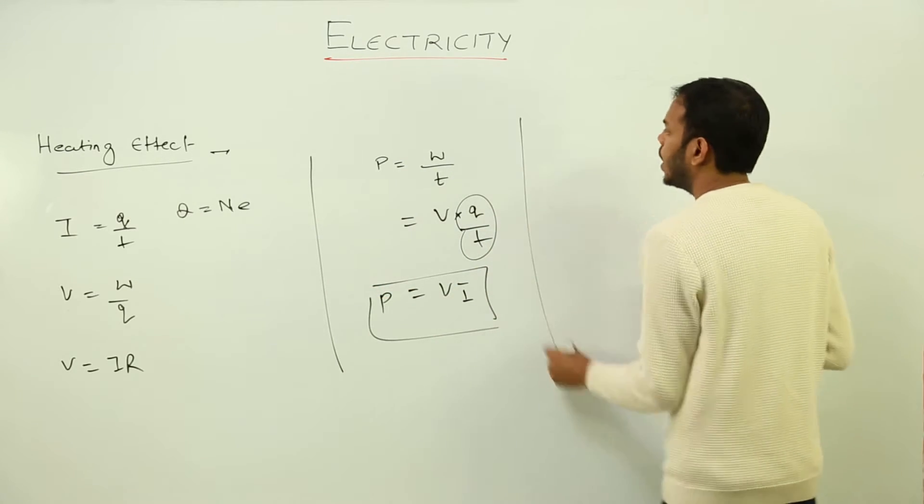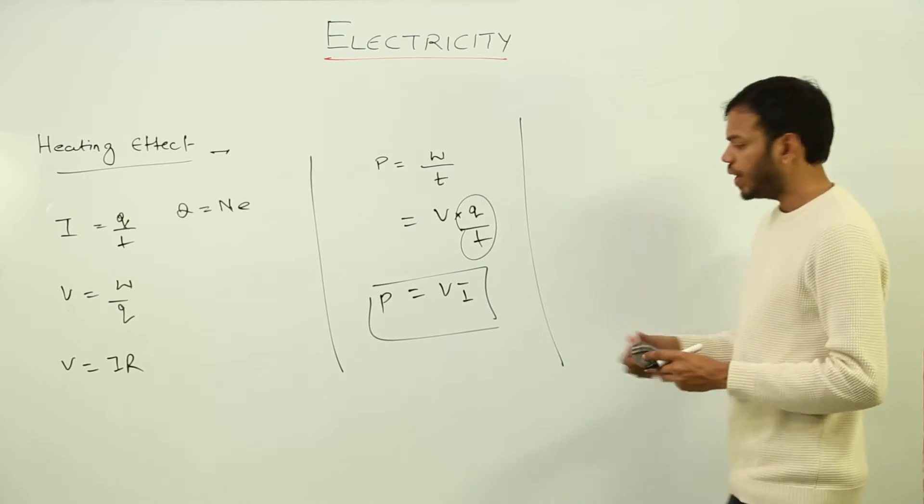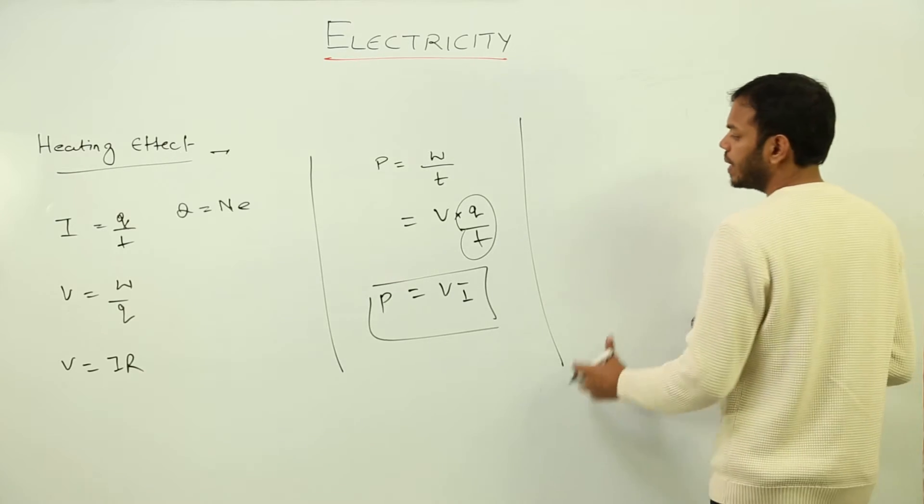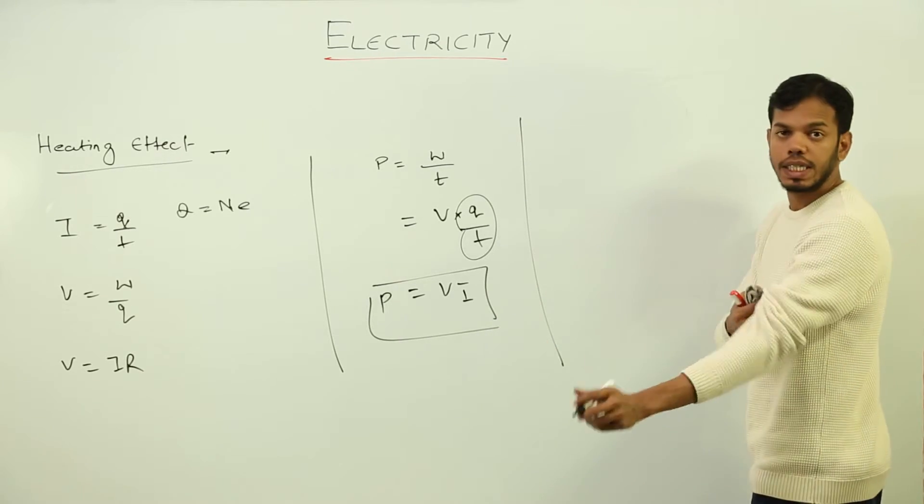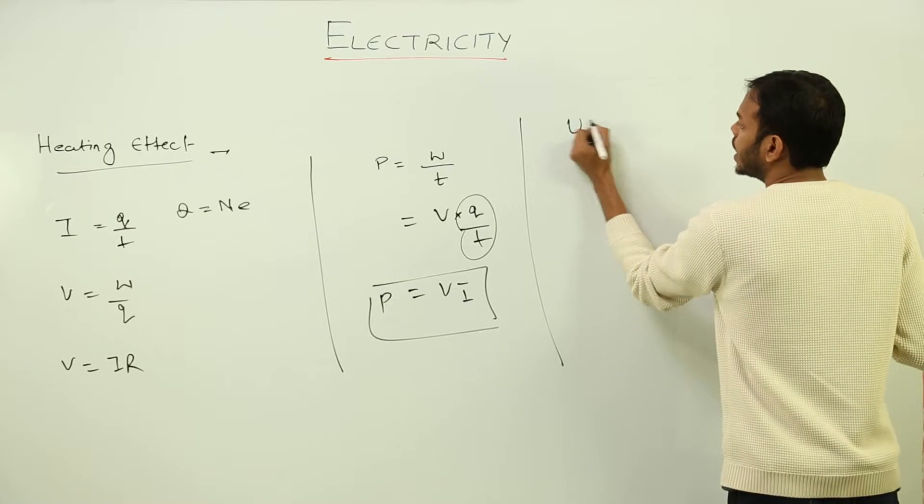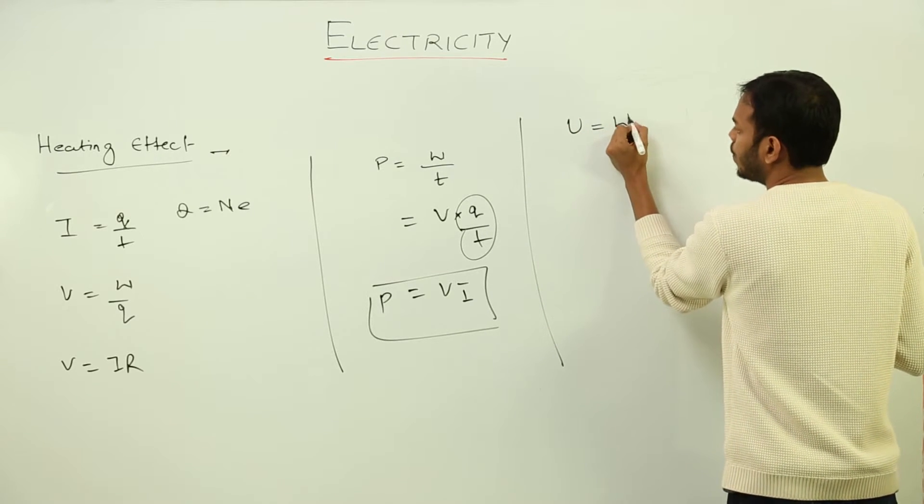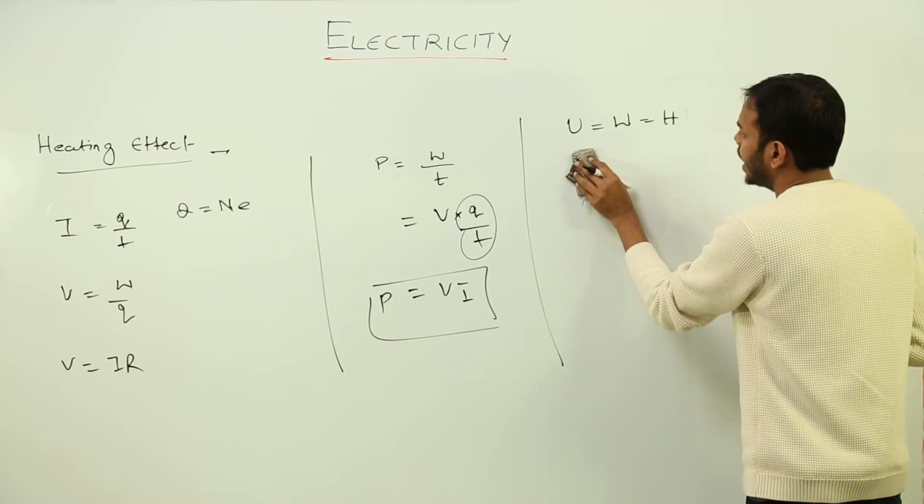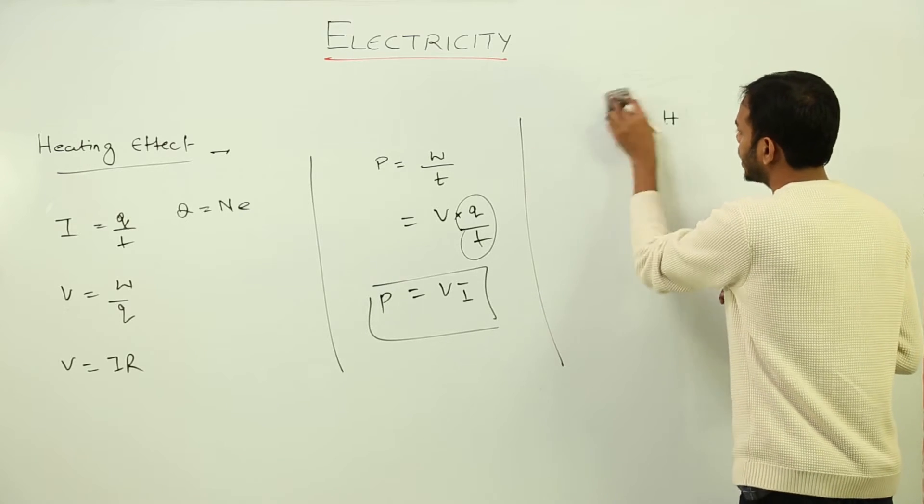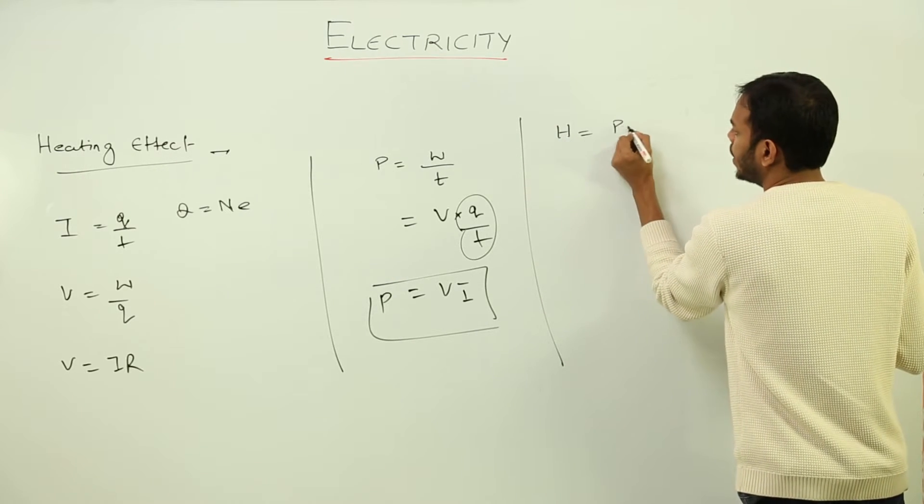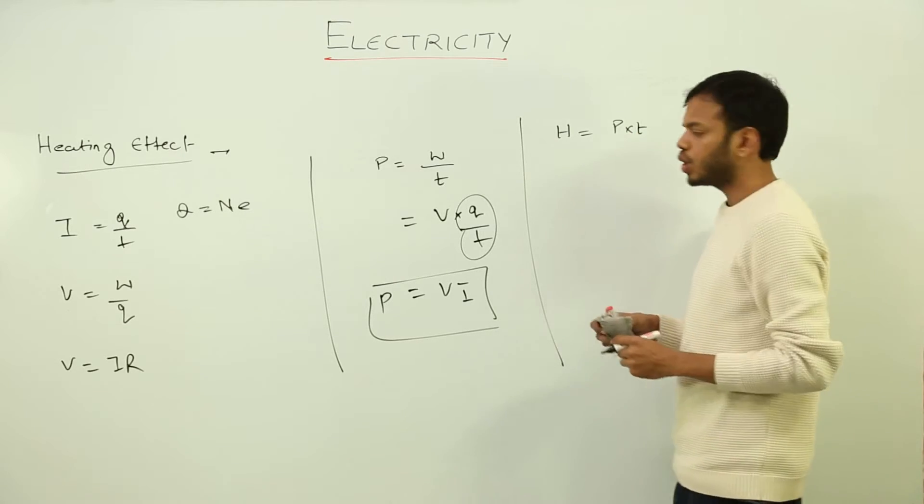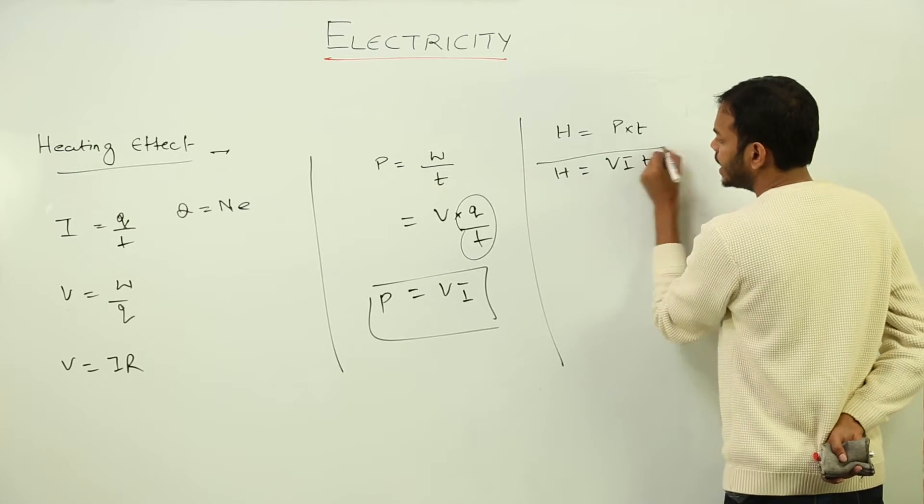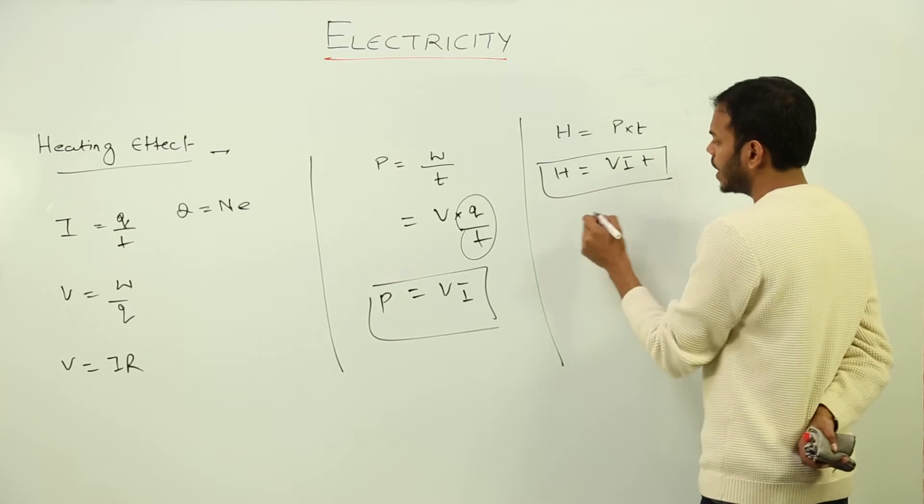Now for work done, we have a formula for power, V into I. Right now I'm looking for heating effect, which is basically energy. So energy, or I can write it as work done or heat energy. So this energy is power into time. What is power? Power is V into I. So this is one of the formulas for heat generated in a conductor: H = VIT.